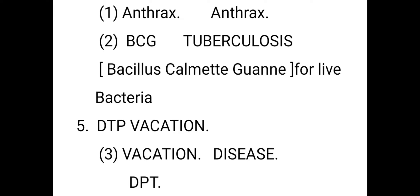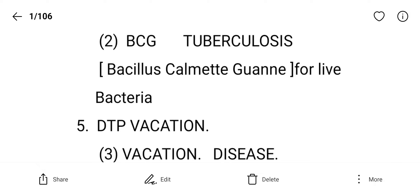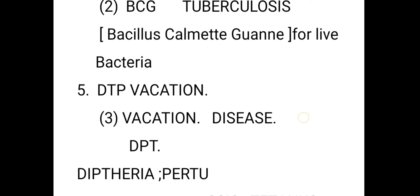Tuberculosis is a disease that most probably affects the lungs. It is a very serious bacterial disease. The BCG vaccine must be taken from age 1 to 16 years — that is very important. TB is a serious infection, mainly affecting the lungs, and it can spread through coughing. Every year, 1 million people are affected through airborne transmission.